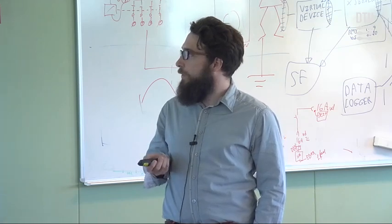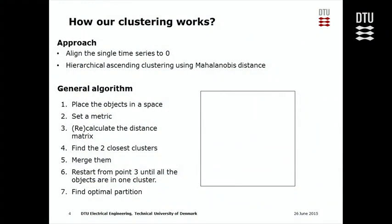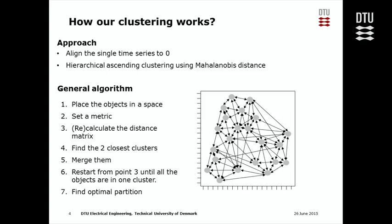The general algorithm is the following. First, we create a space based on all the variables and the data. We place the different objects, the different time series. We set a metric. We measure the distance between the different objects, create a distance matrix, and find the two closer objects.